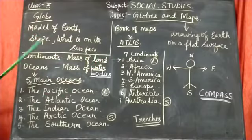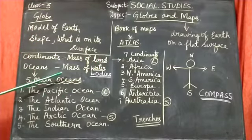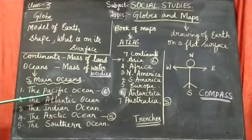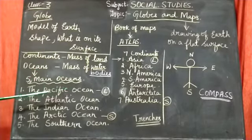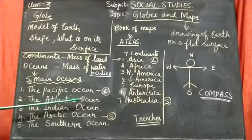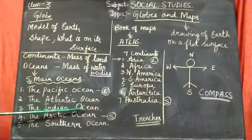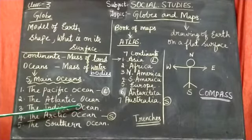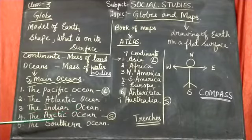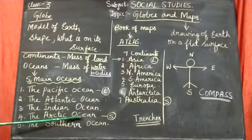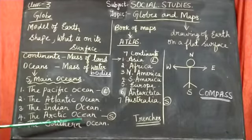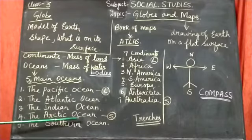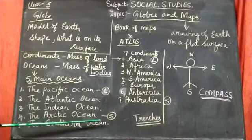Coming towards the large water bodies, oceans are five. There are five main oceans. The Pacific Ocean is the largest ocean. The Atlantic Ocean, the Indian Ocean, the Arctic Ocean and the Southern Ocean. The Pacific Ocean is the largest ocean and the Arctic Ocean is the smallest ocean.